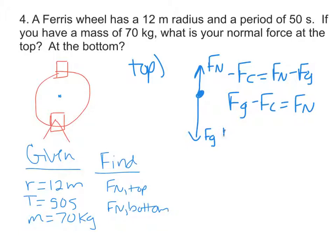My Fg is equal to my mass times g minus my Fc, which is equal to my mass times the speed squared divided by the radius, and that equals my normal force.